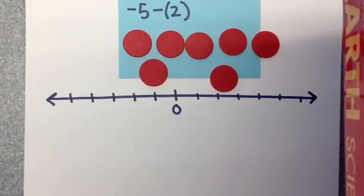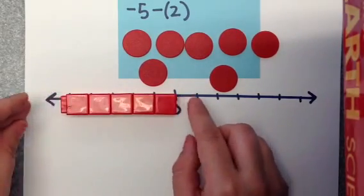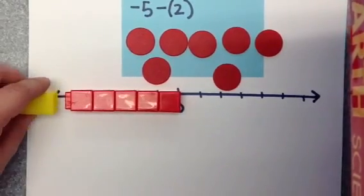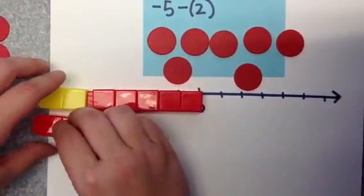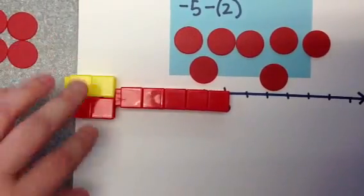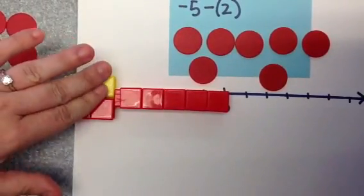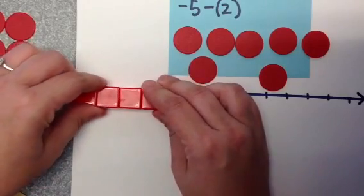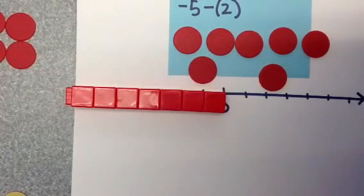What that looks like on the number line with the Unifix blocks is we start off with negative 5. And then we add 2 to make our 0 pairs again. We add 2 positives and 2 negatives. We're going to take away those 2 positives, and we're going to end up with 7 negatives.